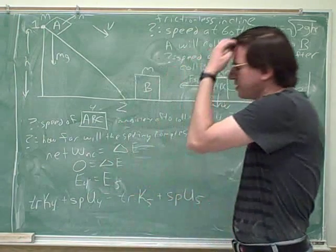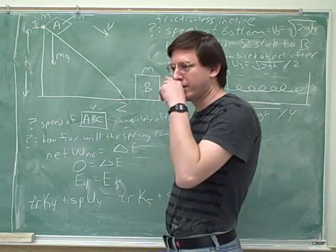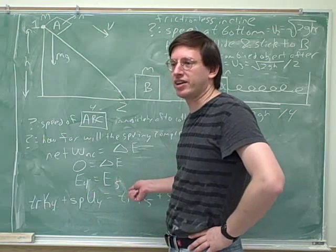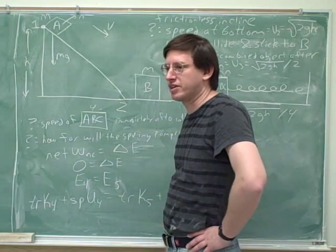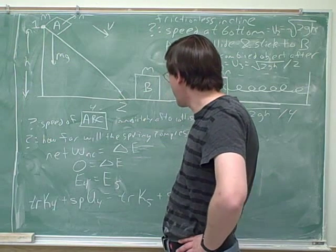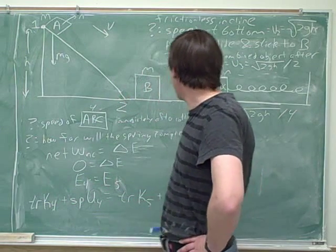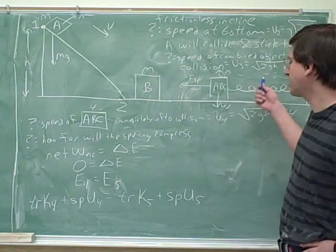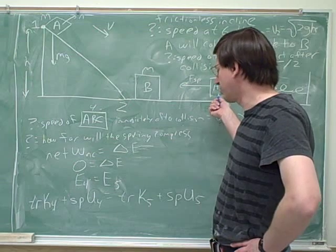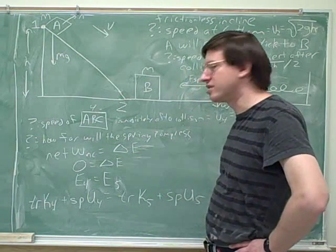The basic principle for conservation of energy is we only have to pay attention to the energies that are changing. If you put the same energy on both sides, they cancel out anyway. We'd expect the speed to be changing, so we include translational kinetic energy. We expect the spring to be compressing, so we include spring energy. But the height isn't changing, so gravitational potential energy cancels out.